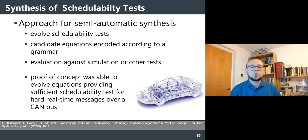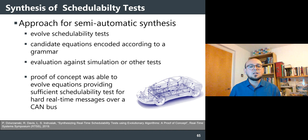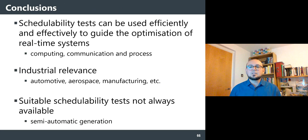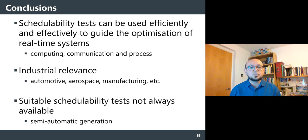We validated this approach with a case study on a CAN bus automotive system — a well-studied problem with known schedulability tests — and managed to synthesize tests of good quality. This was published at RTSS, the top conference in real-time systems. In conclusion, schedulability tests can be used efficiently and effectively to guide optimization of real-time embedded and cyber-physical systems at computing, communication, and process levels, in problems of industrial relevance such as automotive, aerospace, and manufacturing. Where suitable schedulability tests are not available, semi-automatic generation is a viable possibility, and we have made progress in that direction. Thank you.